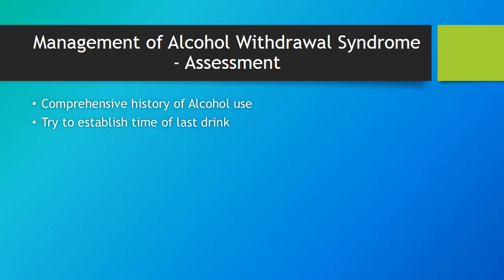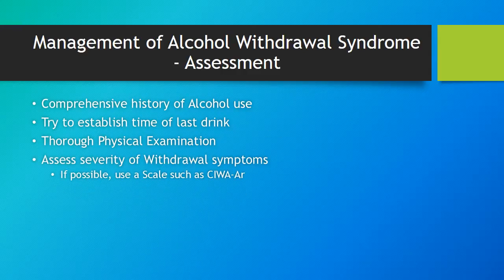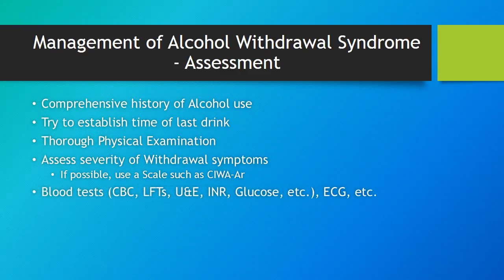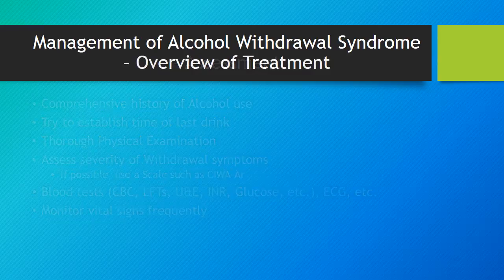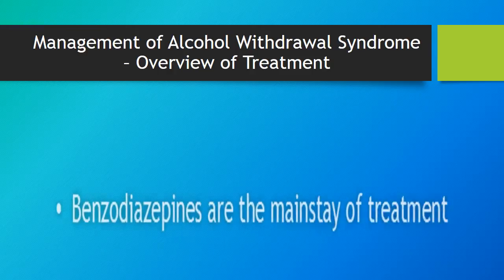Assessment plays a very important role in the management of alcohol withdrawal syndrome. A comprehensive history of alcohol use should be taken; try to establish the accurate time of the last drink. Do a thorough physical examination. Assess the severity of withdrawal symptoms — if possible, use a scale which can give you a scoring. Do the relevant blood tests and other investigations, and monitor vital signs frequently.